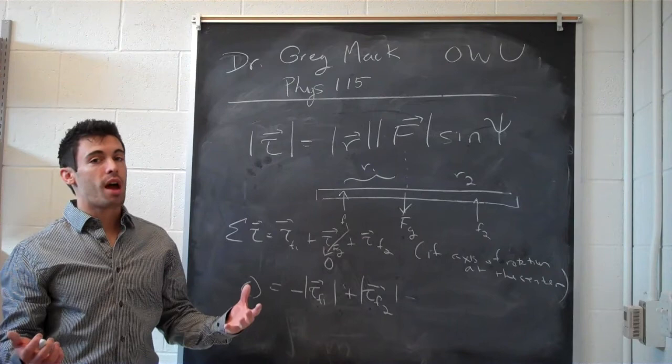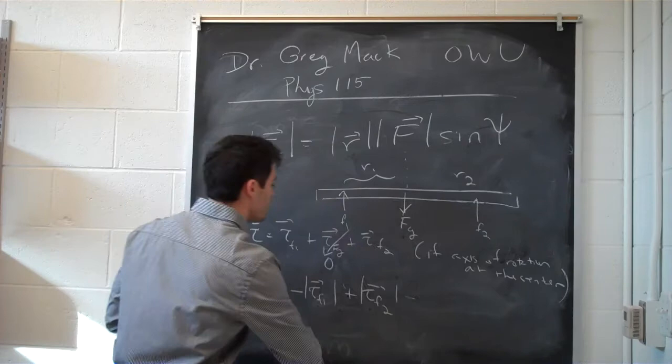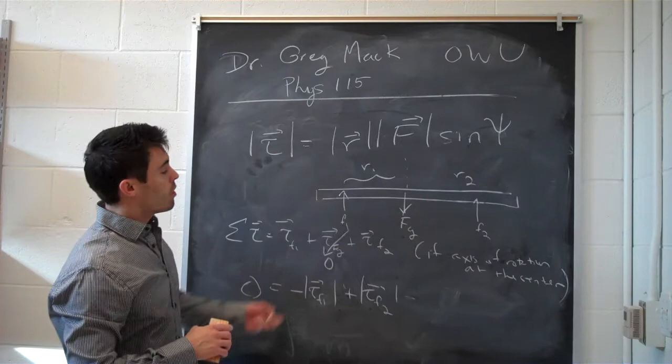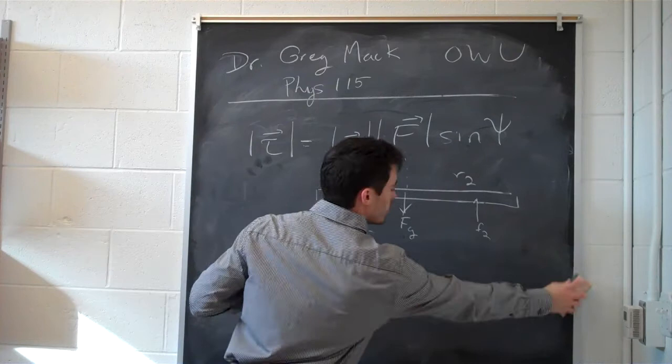Now remember, we have both r and f involved there, so it's a combination of those two things that have to be equal. We are free to choose the axis of rotation where we want it to be. So if we choose the axis of rotation to be at f1...